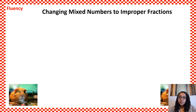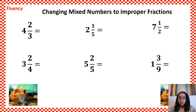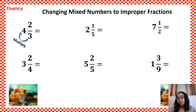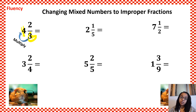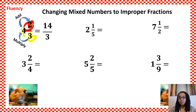For today's fluency, we're going to start by changing a mixed number to an improper fraction. In your math packet or on any blank piece of paper, do the following problems. I'm going to do the first one with you — 4 and 2 thirds. To change a mixed number to an improper fraction, take the denominator and multiply it by the whole number. The denominator 3 multiplied by 4 makes 12, then add that product to the numerator: 12 plus 2 gives 14, so the improper fraction becomes 14 thirds. Do the remaining problems; I'll put up the answers in about a minute so you can check your work.